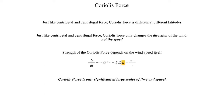The Coriolis force is only significant at large scales of time and space. There's a really common myth that in the northern hemisphere, when you flush a toilet, the water spins in one direction, and in the southern hemisphere it spins in the other direction. That is not true at all. The Coriolis force is way too weak on the scale of a toilet bowl to cause the water to rotate in opposite directions. The reason why the water might rotate in opposite directions is solely due to the way the jets in the toilet bowl are oriented — it has nothing to do with the Coriolis force. We're usually only concerned with Coriolis force on large-scale weather patterns like large-scale lows, highs, troughs, and ridges.